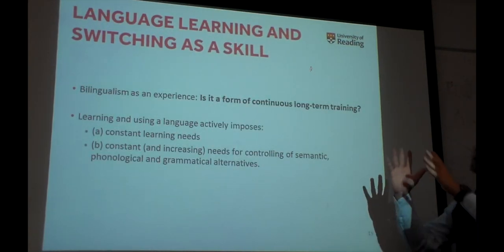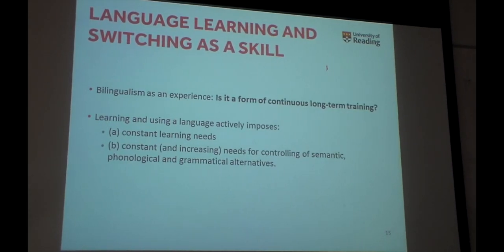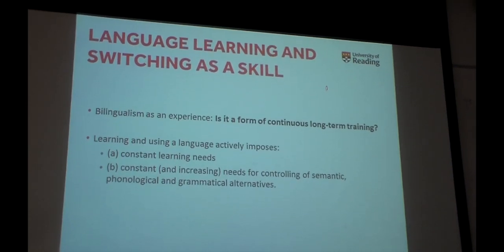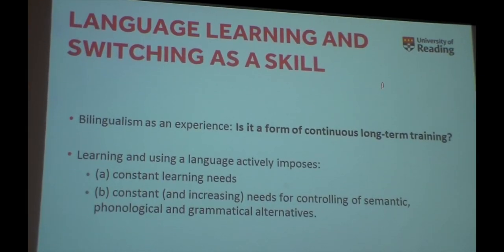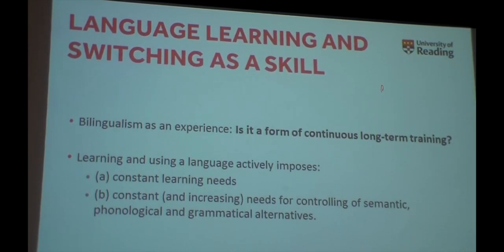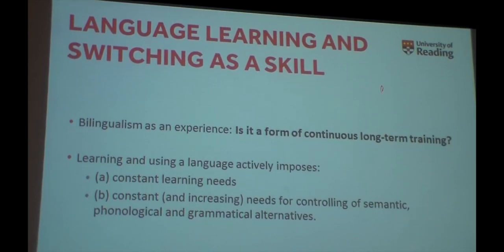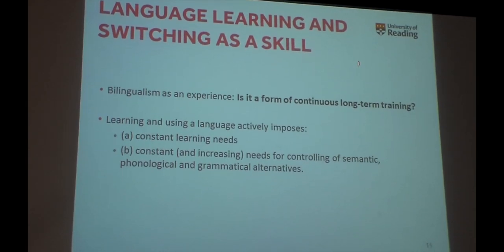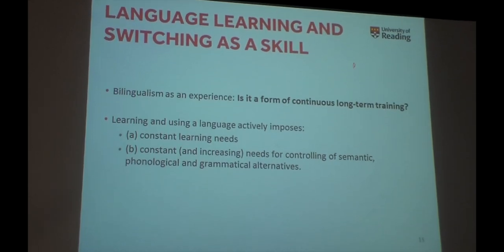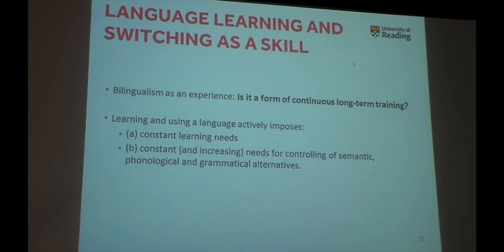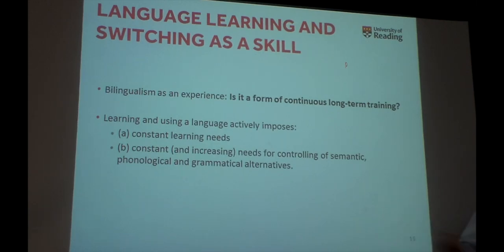Wrapping up all these learning theories and all the evidence on bilingualism and the brain, my question was: is bilingualism an experience, and is it a form of continuous long-term training? The effects are dynamic — is it because the experience itself is dynamic? Learning and using the language imposes constant learning needs. You always learn, especially vocabulary. And the more you learn, the more things there are to compete against each other — the more you know about your second language, the more you need to control your first language. Both languages are active and compete, so the better you become, the more semantic, phonological, and grammatical alternatives you have to control.